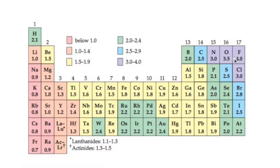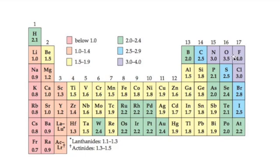Pauling developed an electronegativity scale measuring how well an atom can attract shared electrons to itself in a covalent bond. The larger the number, the more effective that atom is at attracting electrons. Fluorine has the highest value; metals like francium have very low values. The trend is that electronegativity increases from the bottom-left to the top-right of the periodic table, with fluorine being the most electronegative, followed by oxygen.